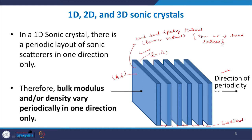Going along this direction, you first encounter B and rho of the scatterer, then after a certain distance it changes to B and rho of air, then back to the scatterer values — this pattern keeps repeating because the material thickness is the same everywhere and the distance between materials is the same. This is a typical one-dimensional sonic crystal.